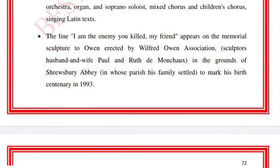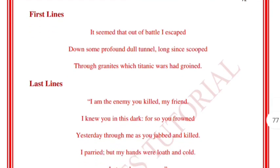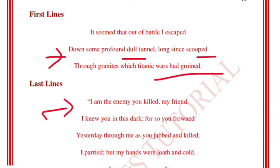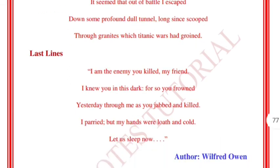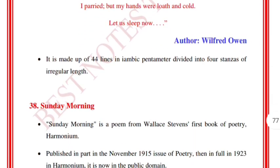The notable line 'I am the enemy you killed, my friend' can be asked as a quotation — it is by Wilfred Owen and is also inscribed on his memorial sculpture. The first lines are: 'It seemed that out of battle I escaped / Down some profound dull tunnel, long since scooped / Through granites which titanic wars had groined.' The poem is made up of 44 lines in iambic pentameter divided into four stanzas of irregular length.